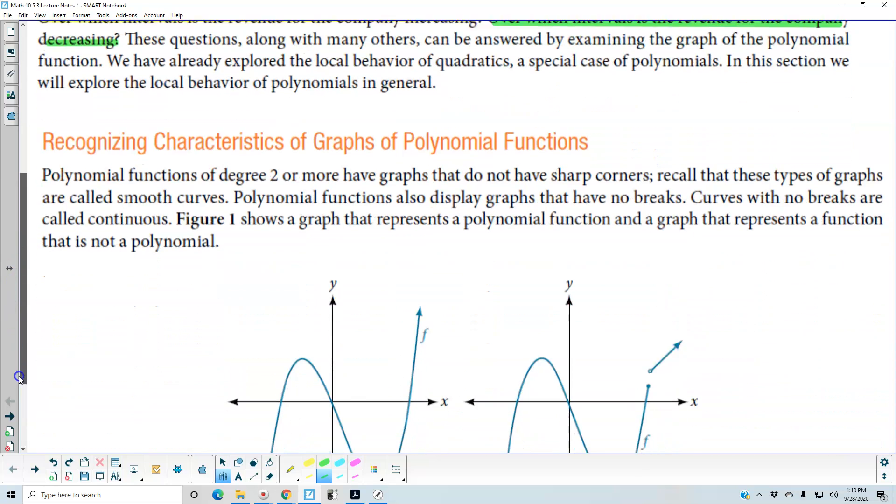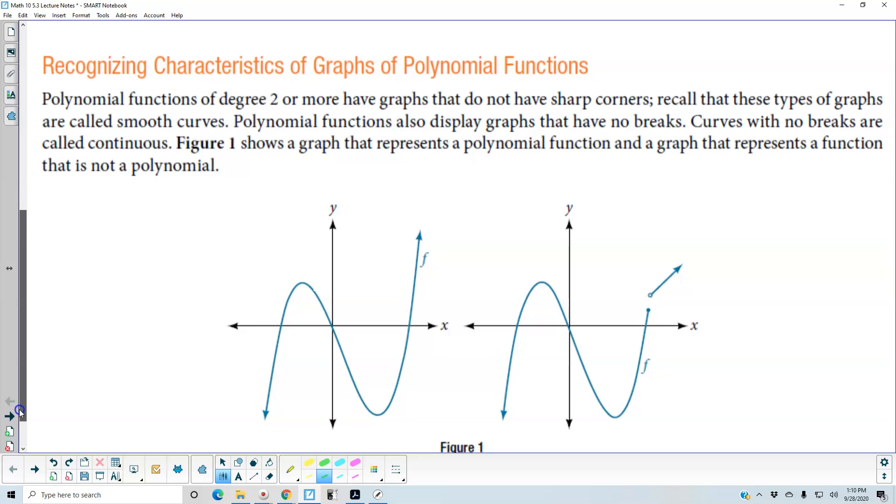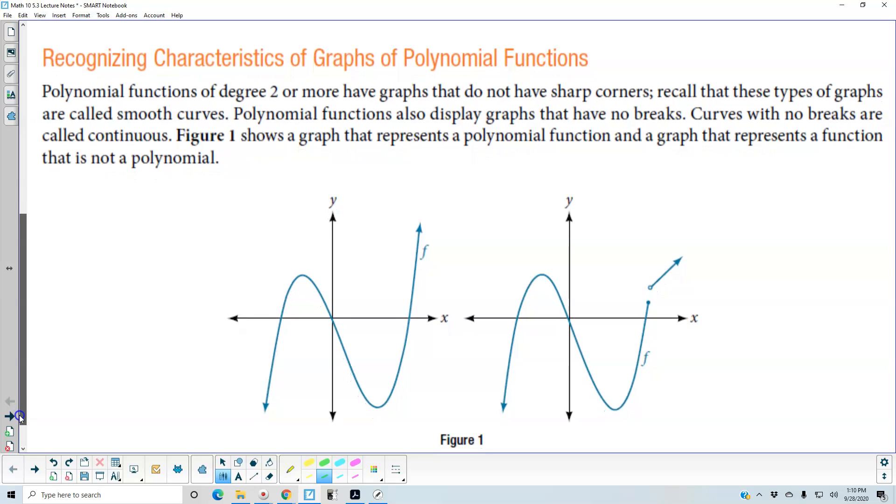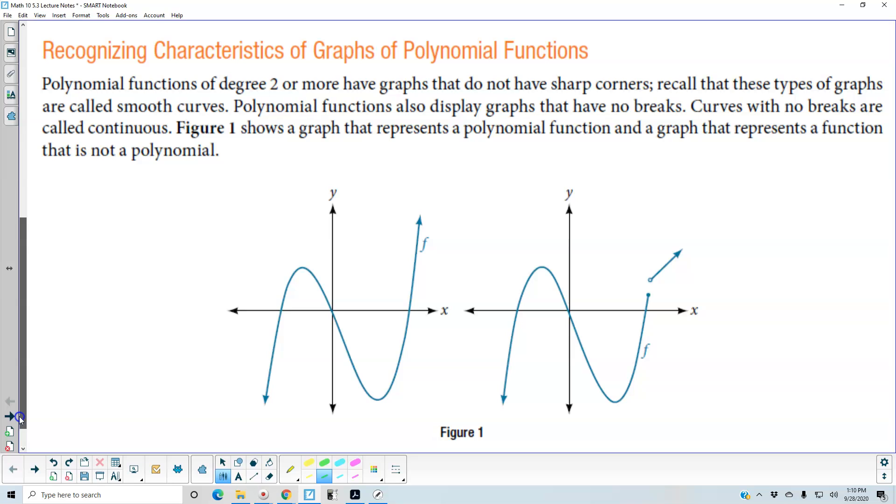Now recognizing characteristics of graphs of polynomial functions. Polynomial functions of degree 2 or more have graphs that do not have sharp corners. Recall that these types of graphs are called smooth curves. Polynomial functions also display graphs that have no breaks. Curves with no breaks are called continuous.